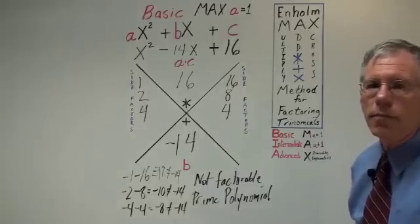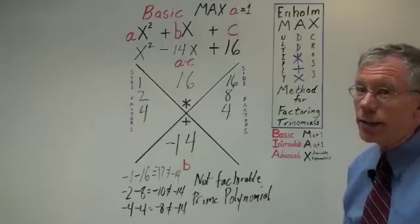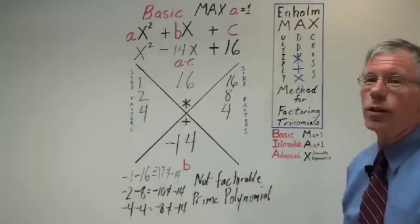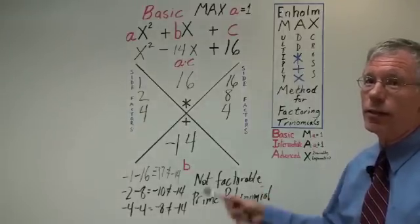Now, if you want to be thorough about this, you can say that 1 plus 16 doesn't equal negative 14. But that's not even a negative number, so that's not even close. So if we just stick with the negatives, we don't get there. So what you write is not factorable and or prime polynomial.